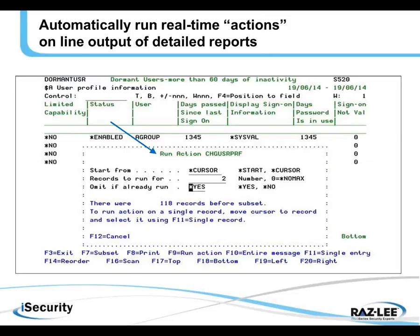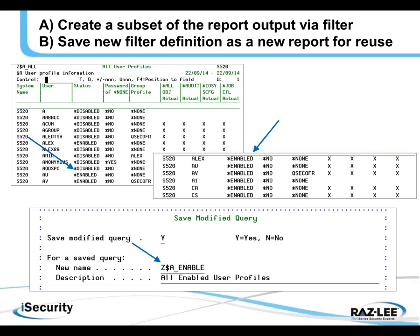Once we have the output, we can automatically run real-time actions on line output. As you can see here, we want to run an action called 'change user profile' on any one of these four lines of output from this report, which is for dormant users of more than 60 days of inactivity. We want to change their user profile, starting from the cursor, running for two records. It's very easy, it runs well, and again these are requests from the field.